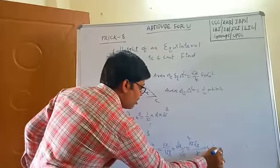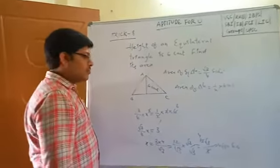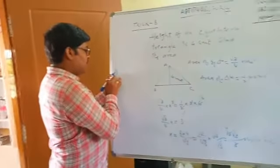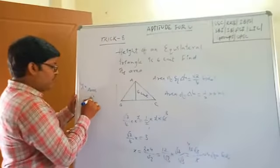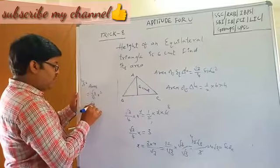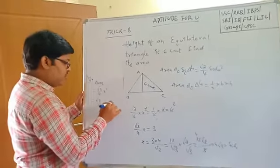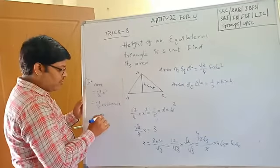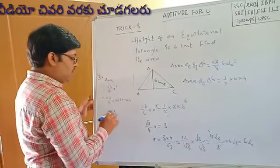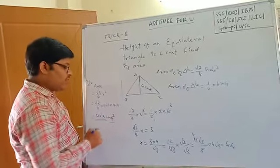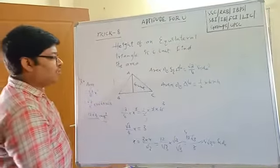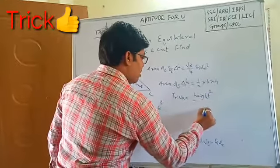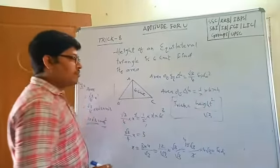So the side is equal to 4 root 3. Now area of equilateral triangle equals root 3 by 4 times side squared equals root 3 by 4 times (4 root 3) squared. That gives root 3 by 4 times 48, which equals 12 root 3. So 12 root 3 cm squared is the area.